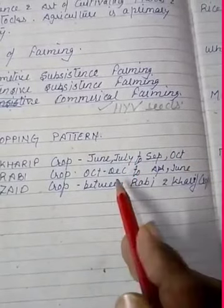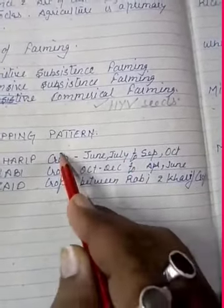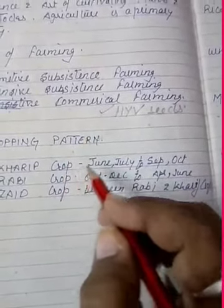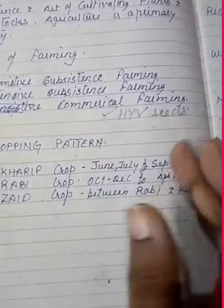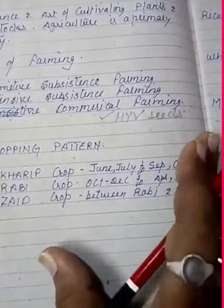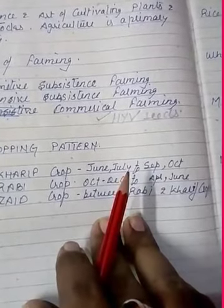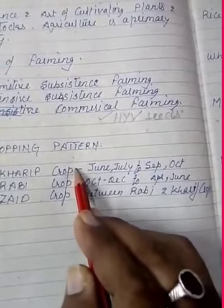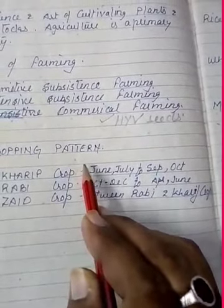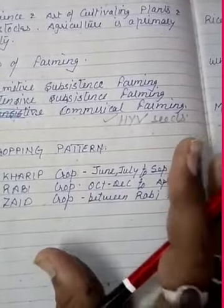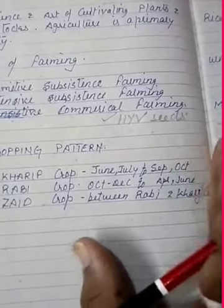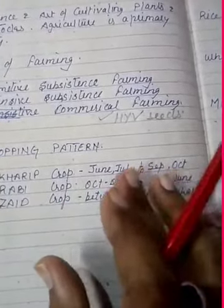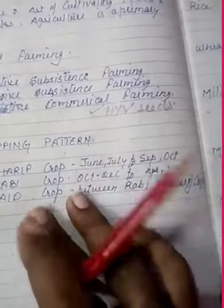The important Kharif crops are paddy, jowar, bajra, moong, cotton, jute, soya bean, etc. It is mostly grown in Kerala, Assam, Telangana, Tamil Nadu, and Maharashtra — particularly in Konkan. In UP and Bihar recently, paddy has also become an important crop of Punjab and Haryana.